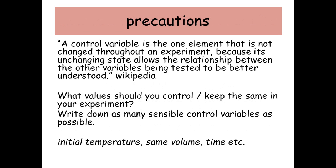So precautions. I've just basically ripped this off Wikipedia and it's about a control variable. So a control variable is the one element that cannot be changed throughout an experiment because its unchanged state allows the relationship between the other variables being tested to be better understood. So basically this is the things that you are going to keep the same in your experiment.